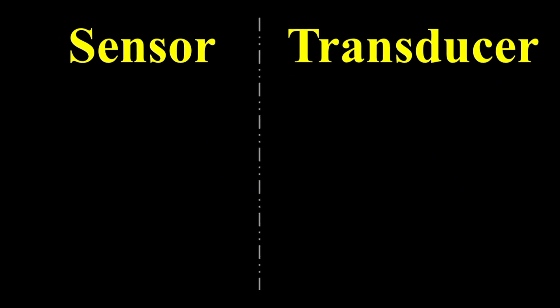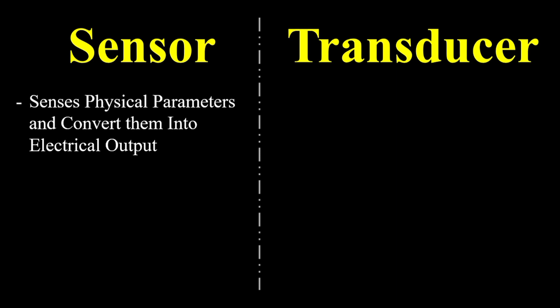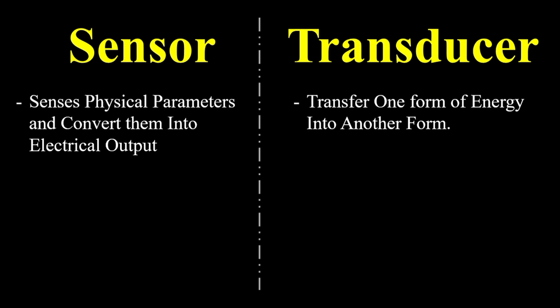First, we will differentiate these two by their definitions. Sensors are used to sense physical parameters and convert them into an electrical output. Whereas transducers are used to transfer one form of energy into another form of energy.